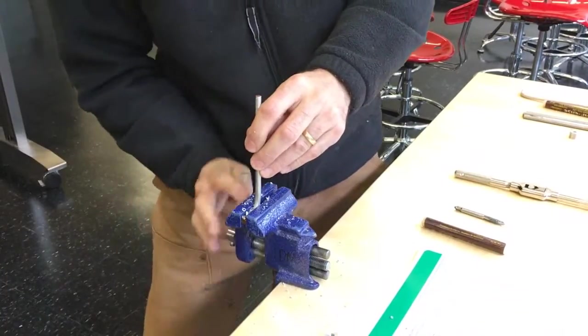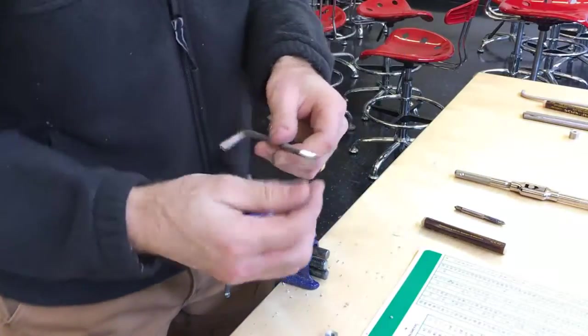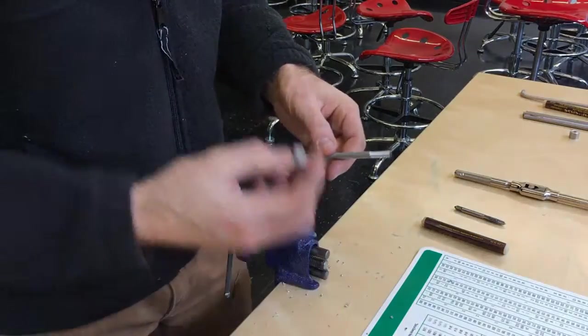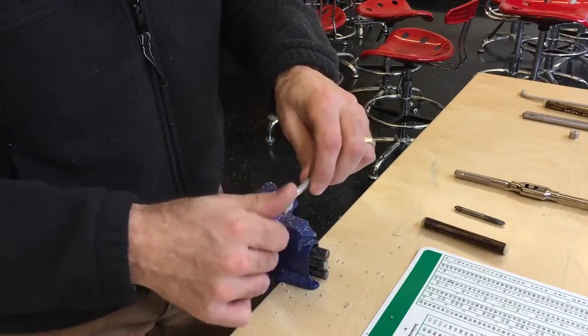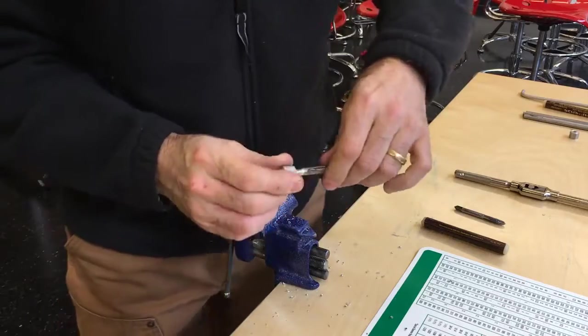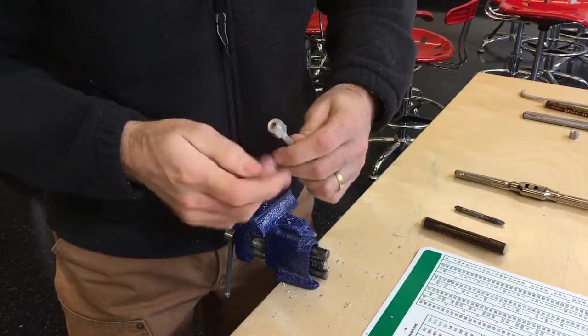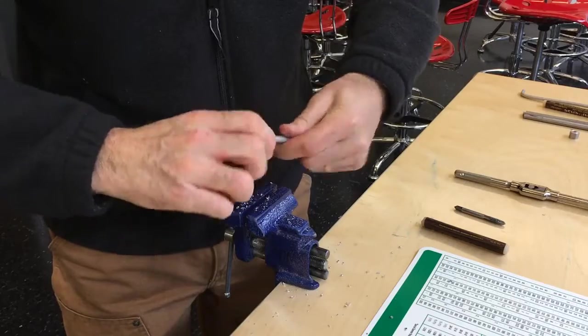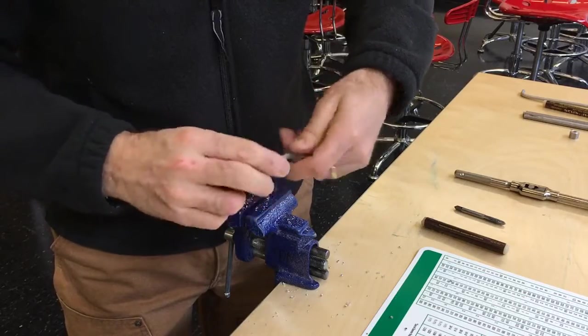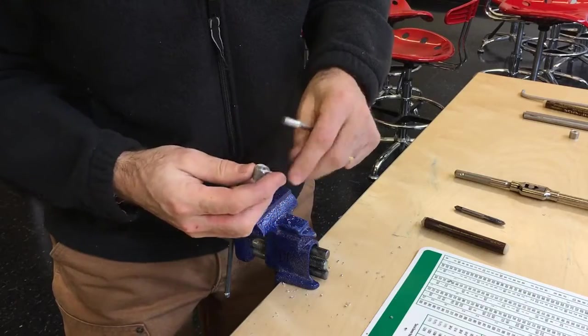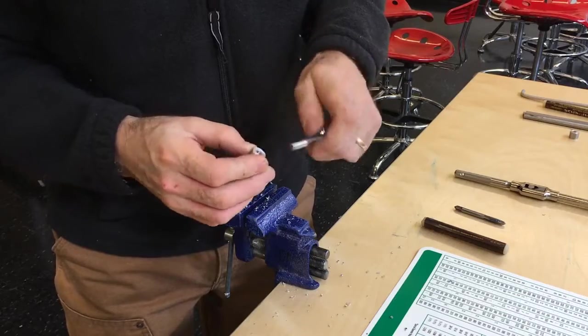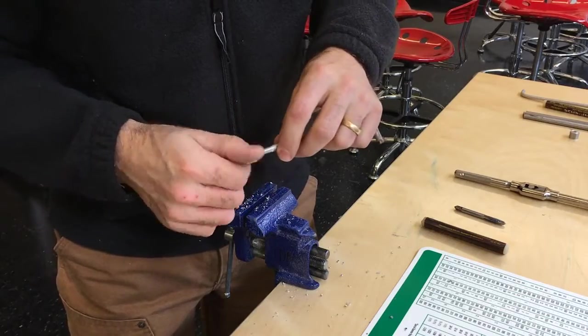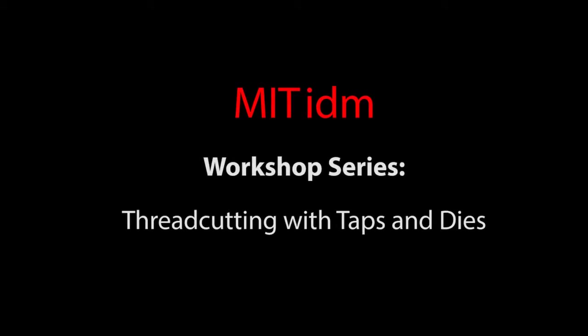So here we have male threads. They look pretty good. And then female threads on the nut. And hopefully, yes, they do, in fact, spin together. Because I haven't cleaned the edge, because I haven't cleaned the openings of the holes on the nut, like I said I was going to, it's a little bit tough going on here, but that's mostly just because there's a little burr on here. If I take those burrs off, it should slide right on.